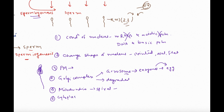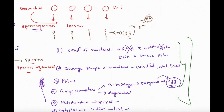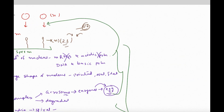The last change is that the cytoplasmic content is lost. We know that sperm only contributes genetic material — it does not contribute cytoplasm. There is a very thin layer of cytoplasm in the head region, but that is not going to fuse with the ovum. Once all these changes occur in the spermatids, we get mature sperms. This entire process is called spermiogenesis.